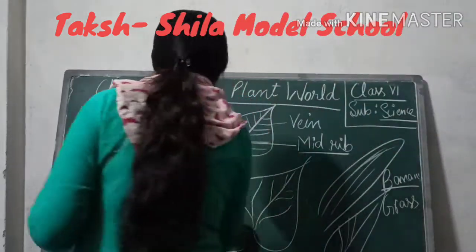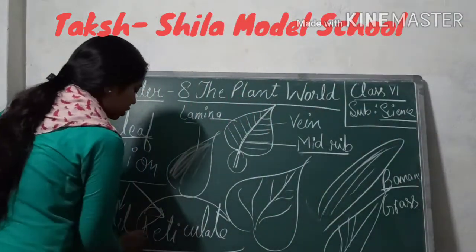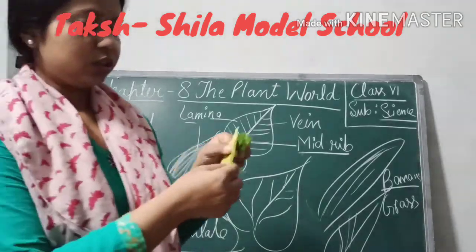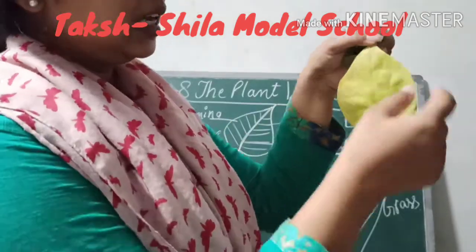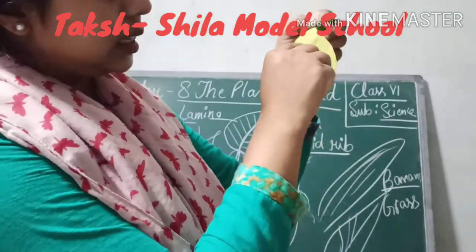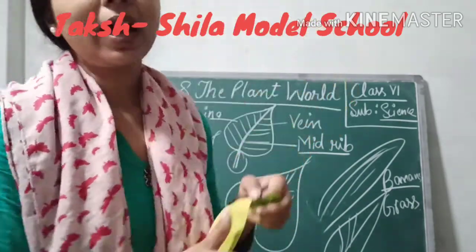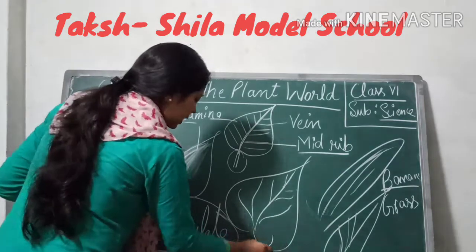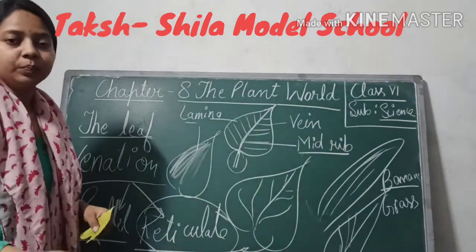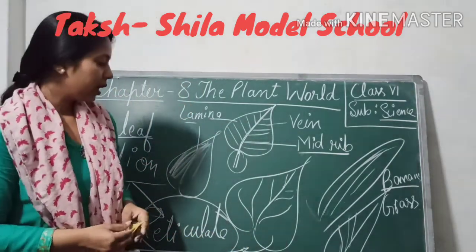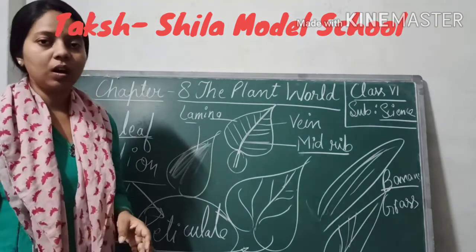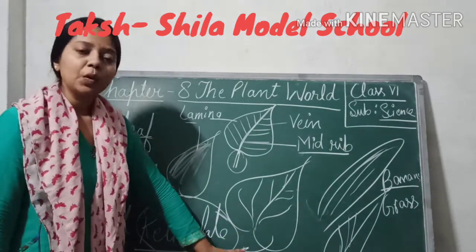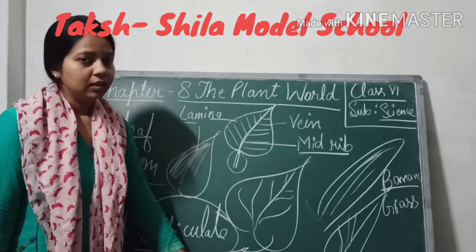In reticulate venation, the veins form a mixed, net-like pattern on the leaf surface. This type of venation is present in hibiscus and many other trees. So in different leaves, different types of venation are present.